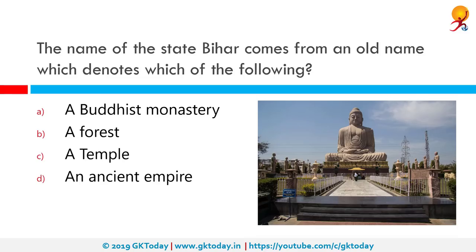The name of the state Bihar comes from an old name which denotes which of the following? The correct answer is a Buddhist monastery. The name Bihar is derived from the Sanskrit and Pali word Vihara, meaning abode. The region encompassing the present state was dotted with Buddhist Viharas — the abodes of Buddhist monks — in ancient and medieval periods. That is why it is known as Bihar.